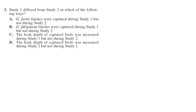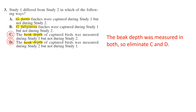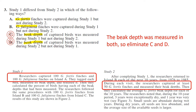Question three: Study One differed from Study Two in which way? We use process of elimination. Choices A and B ask which type of birds were captured; choices C and D ask about beak depth. We know they measured beak depth in both studies from question one. In Study One, they captured both the Fortis and the Fuliginosa. In Study Two, they only captured the Fortis. So the Fuliginosa were captured in Study One but not Study Two — your answer is B.